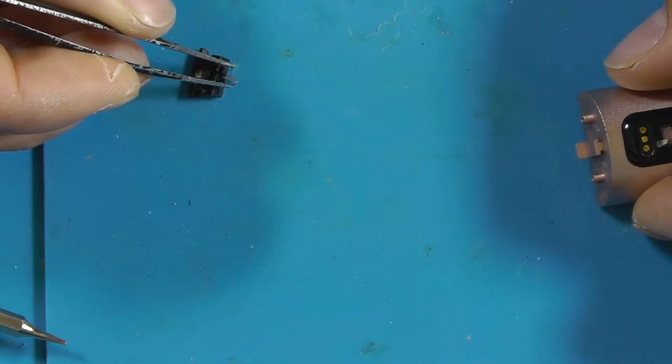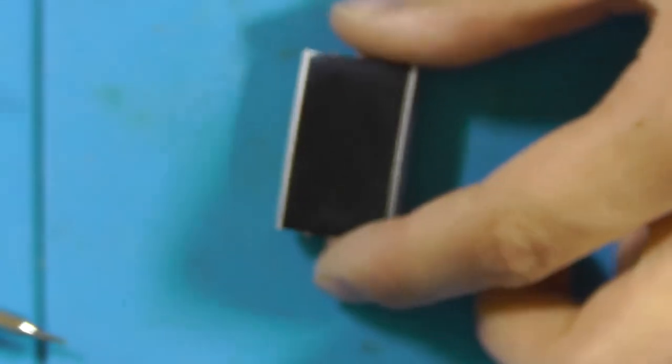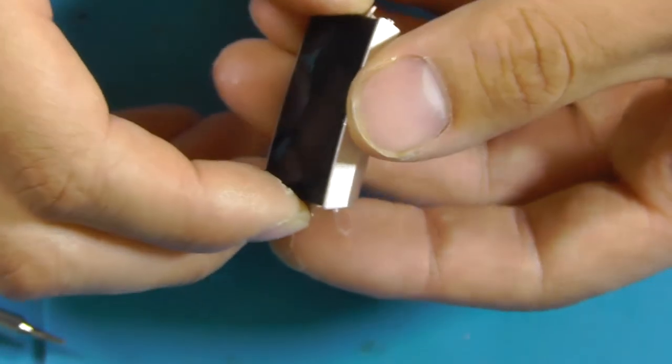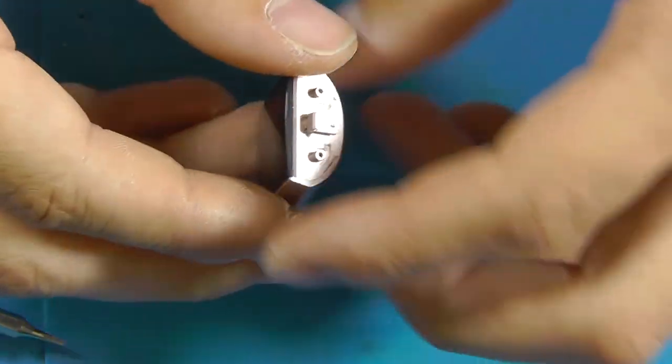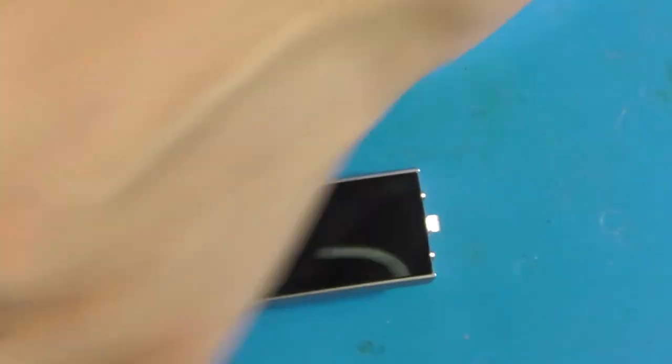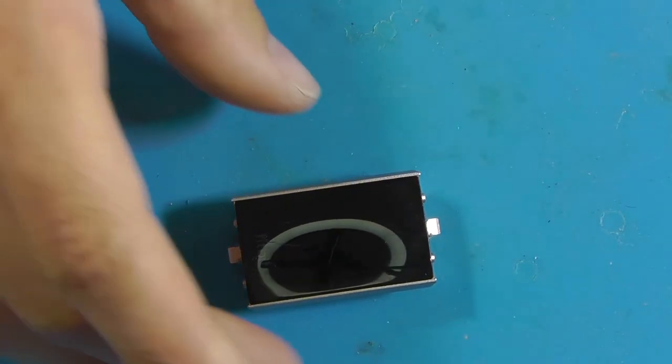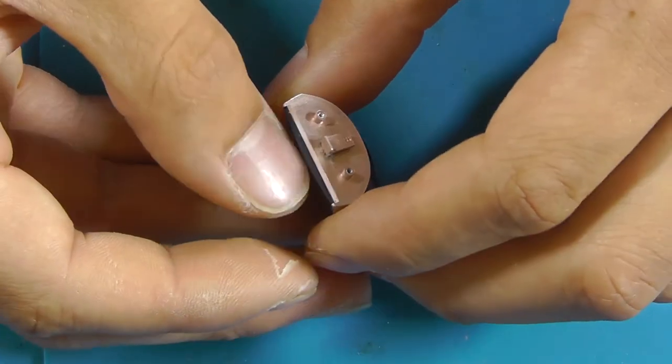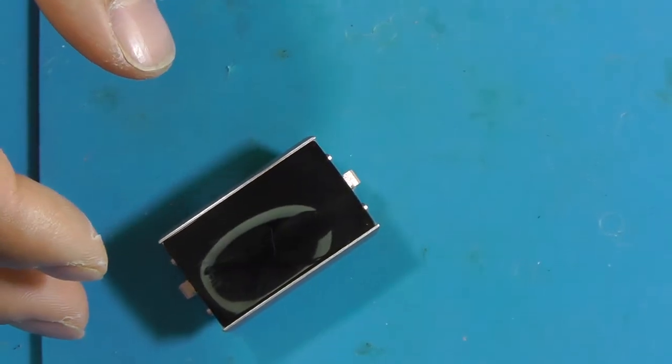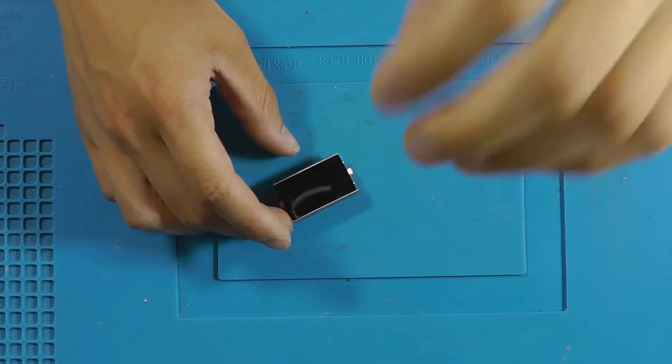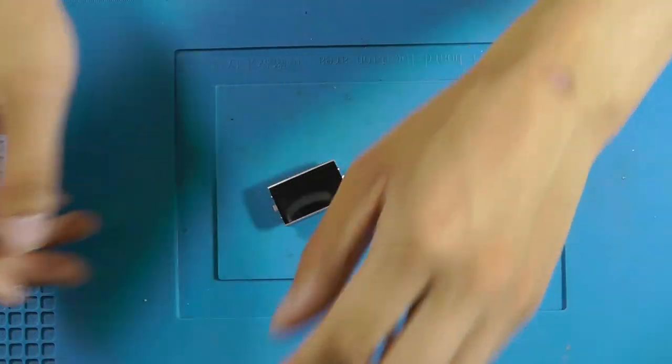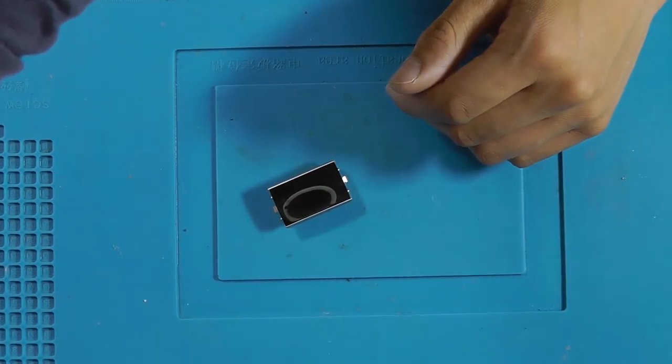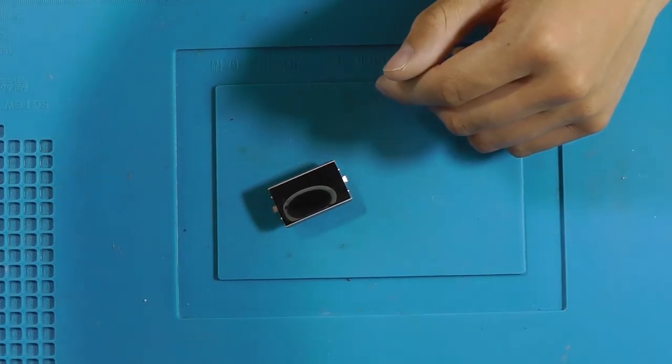Now removing the screen will be very challenging as it's glued to the device. But I've got an idea. I'll use some hot air to hopefully warm up the glue so we can remove it. Going to use 190 degrees for this at my lowest setting.